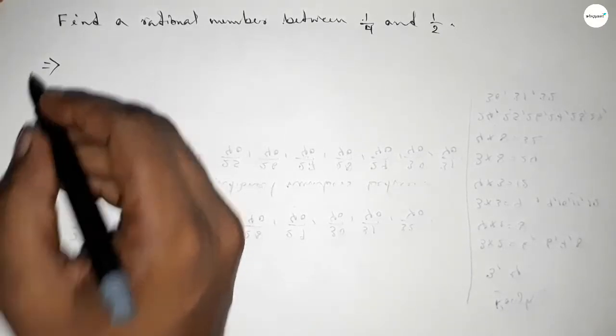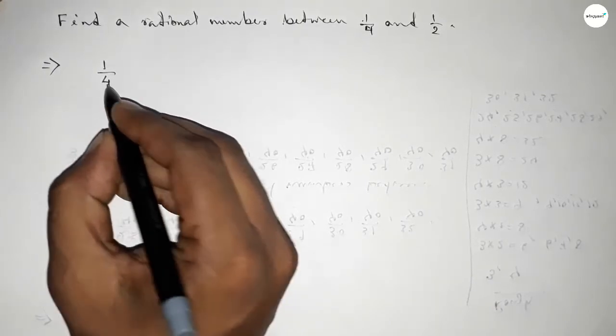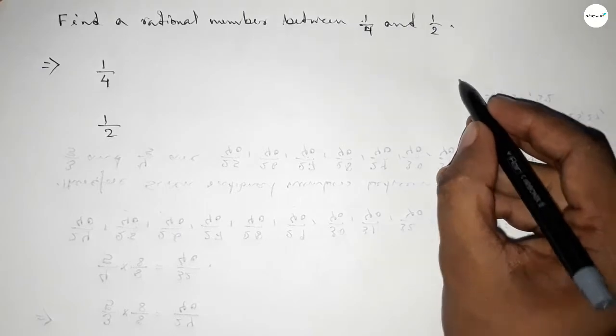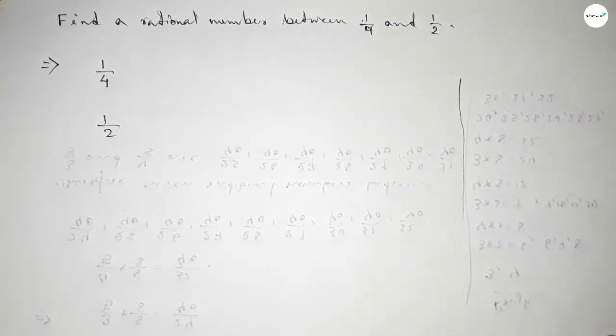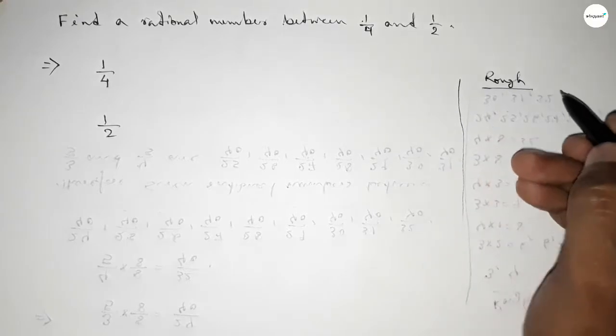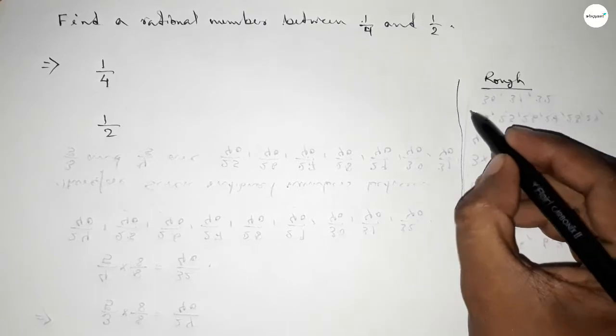Let's start the video. First of all, write down here the given numbers: 1 over 4 and 1 over 2. Now roughly discussing some important calculations here, the denominators of both are not same.